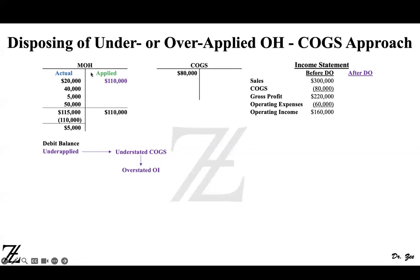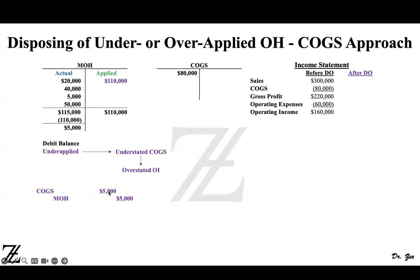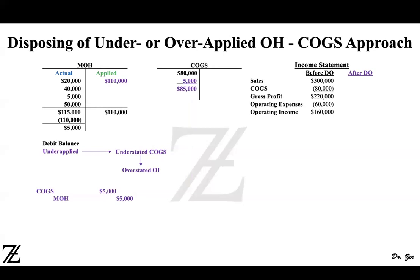So how do you fix that? Because MOH has a debit balance, you have to credit MOH by $5,000. Following double-entry accounting, the same amount needs to be debited elsewhere. Because we are using the write-off to cost of goods sold approach, we debit cost of goods sold and credit MOH by $5,000. When you debit $5,000 in cost of goods sold, your cost of goods sold increases by that amount. Adding $5,000 to $80,000 gives you $85,000 in cost of goods sold.